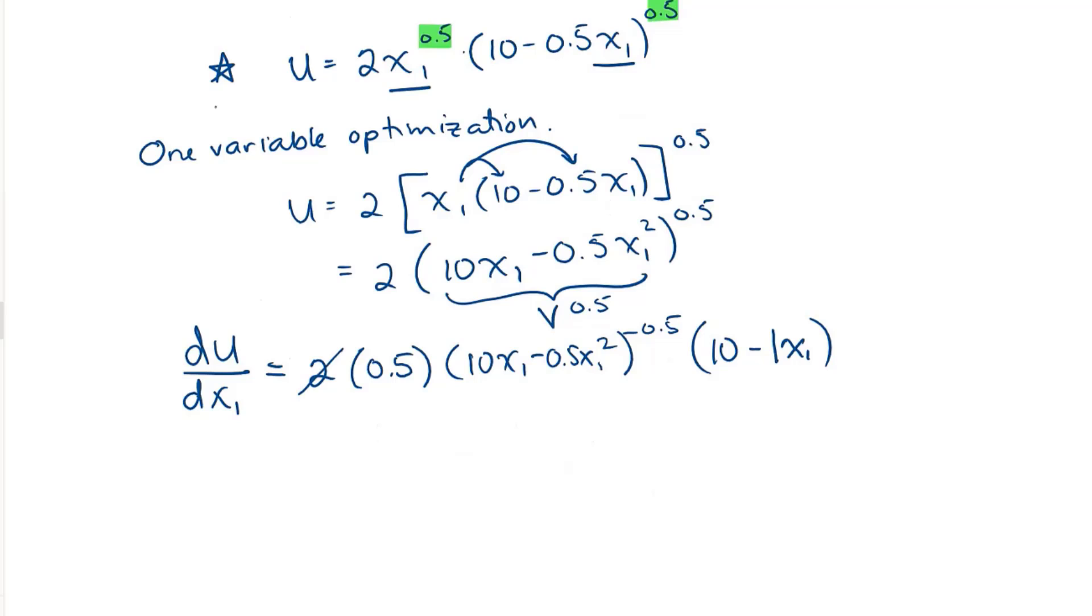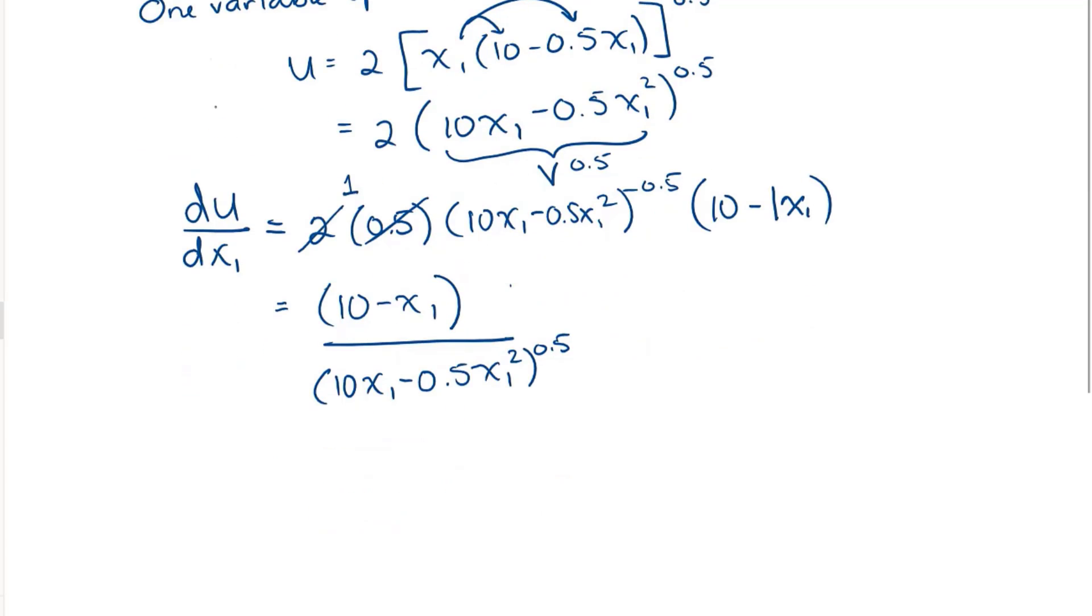So 2 and 0.5 multiply to give me 1. This gives me 10 minus X1 times 10 X1 minus 0.5 X1 squared, all to the power of negative 0.5. Because this is a negative exponent, I could rewrite this, putting it in the denominator instead. So there is my first derivative.